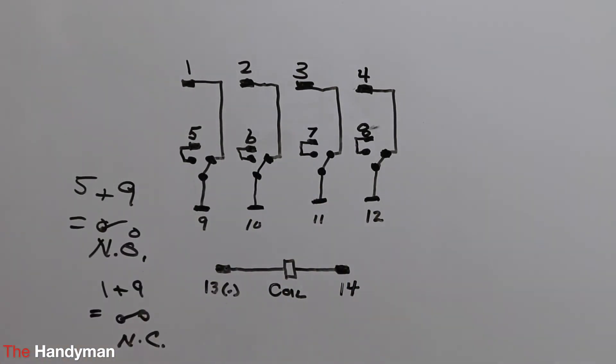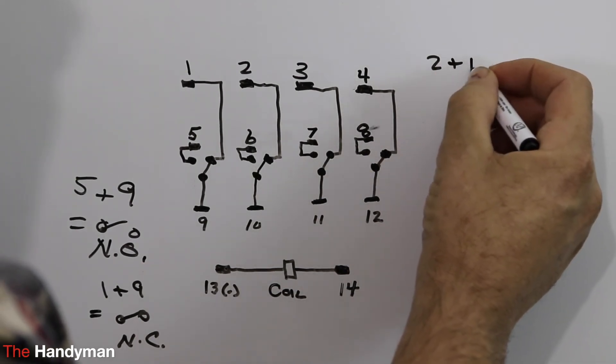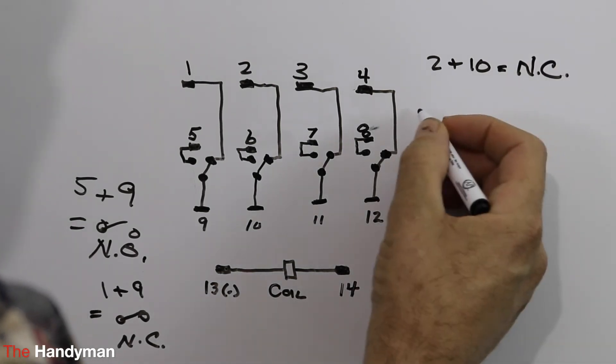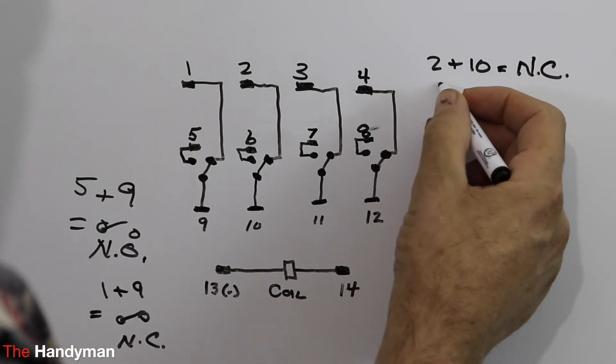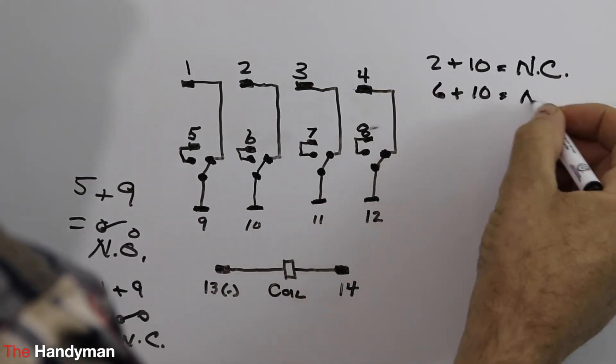So what you could have here is on the next one, pin two and ten is normally closed. Pin six and pin ten is normally open.